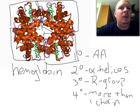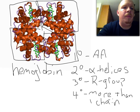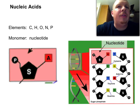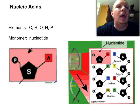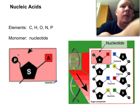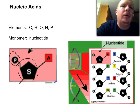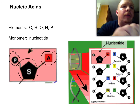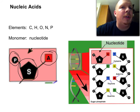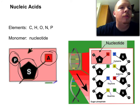The last group are nucleic acids. The elements found in nucleic acids include carbon, hydrogen, oxygen, nitrogen, and phosphorus. The monomer is called a nucleotide, and there are three parts: a phosphate group, a sugar, and a nitrogenous base. You can see them linked together in the diagram to the right — the sugar is bound to the phosphate, repeating sugar-phosphate-sugar-phosphate all the way down, with the nitrogenous bases in the center. That's a picture of DNA.